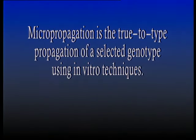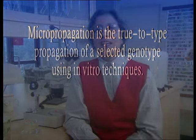The area of micropropagation is what we endeavor to cover in this video. Micropropagation is the true-to-type propagation of a selected genotype using in vitro techniques. Several stages are involved, each influenced by an array of physical, nutritional and hormonal factors. Micropropagation only makes sense when adequate starting material is used; therefore the choice of stock plant material cannot be done indiscriminately.